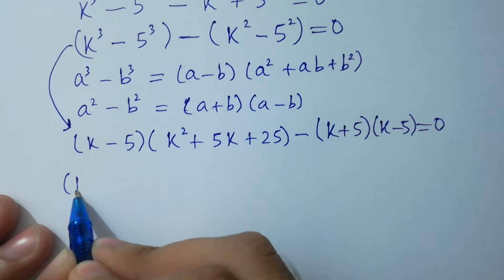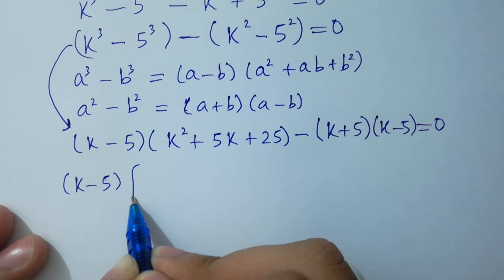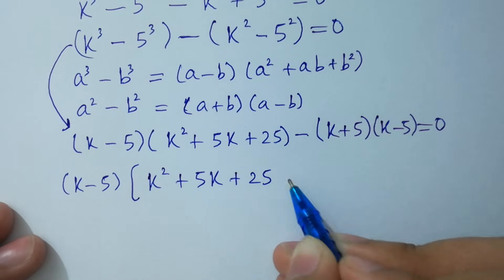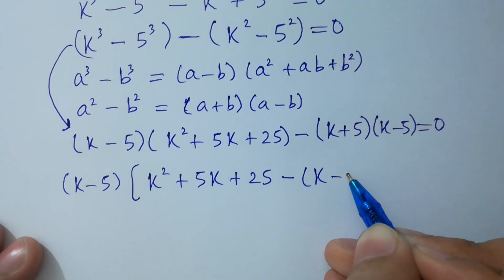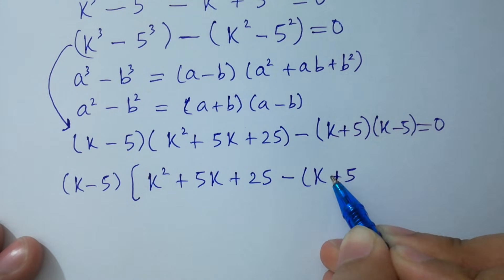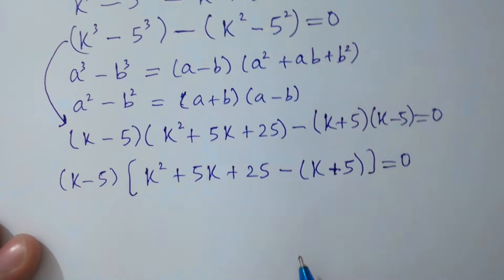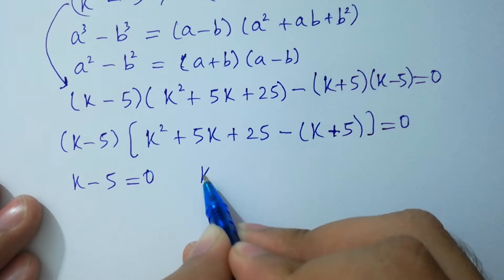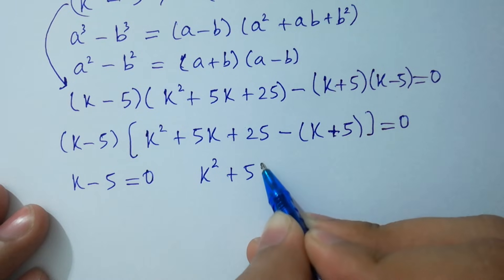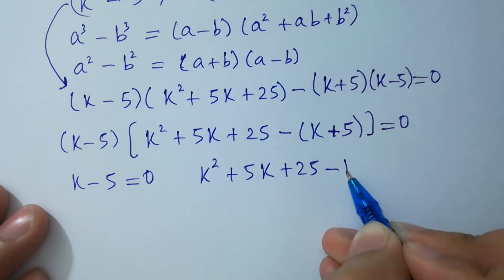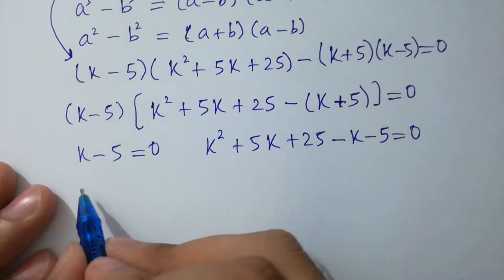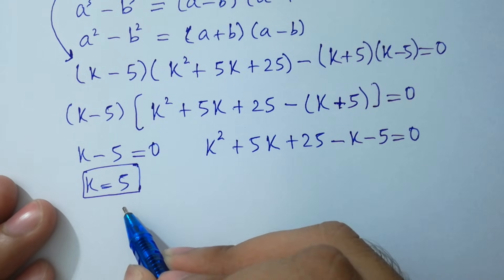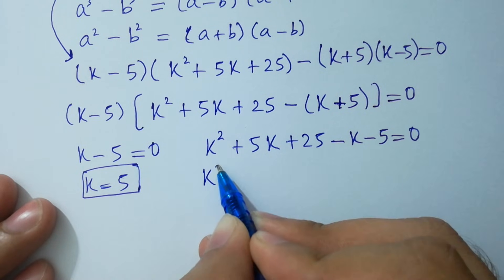So (k minus 5) is common. Factoring it out: (k minus 5)(k squared plus 5k plus 25 minus k minus 5) equals 0. Therefore, k minus 5 equals 0, giving us k equals 5, which is our first real solution.